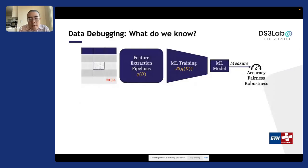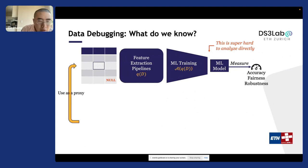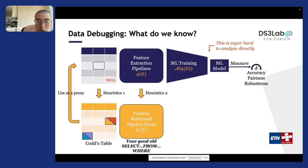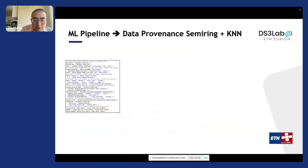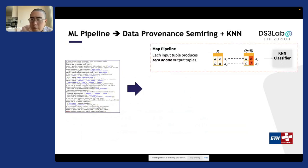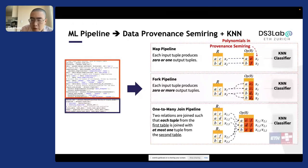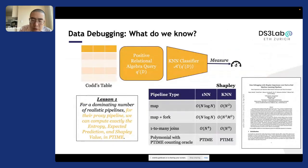What we know is that the end-to-end ML pipeline is super hard to analyze, but you can approximate it with a proxy pipeline, which makes the problem much easier. Given an end-to-end program, you can approximate your feature extraction pipeline as data polynomials — represented as polynomials in a permanent semiring — and approximate the ML training component with a simpler classifier such as a k-nearest neighbor classifier. Once you do this, you can have polynomial-time algorithms for important metrics such as Shapley value, expected prediction, or entropy.